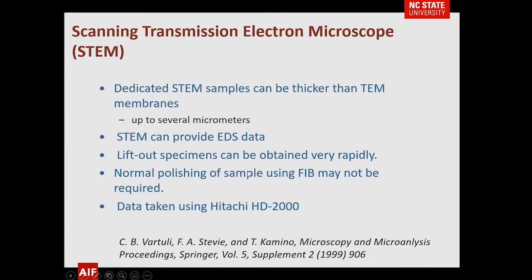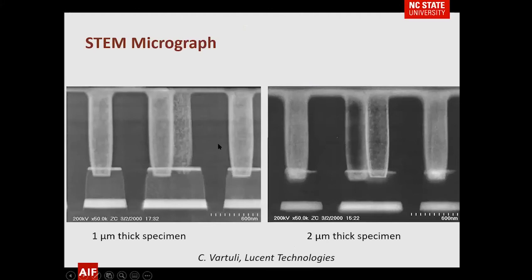It's also possible to use a scanning transmission electron microscope, STEM, which allows you to leave the sample thicker. This has advantages: in semiconductor work, as you're thinning, if you're not sure of the orientation you may remove more than desired. With STEM you can image a sample quite a bit thicker — these images are from a one-micrometer and a two-micrometer thick specimen. You can get some idea of the structure in three dimensions and determine where to thin and which side to thin further.